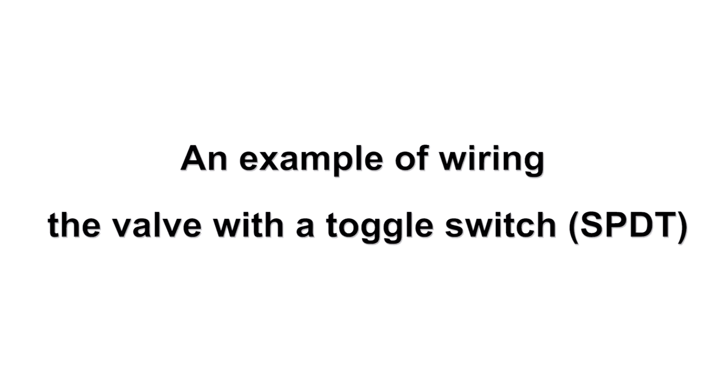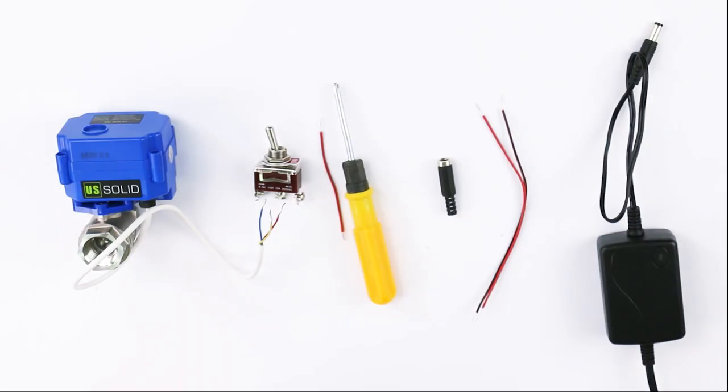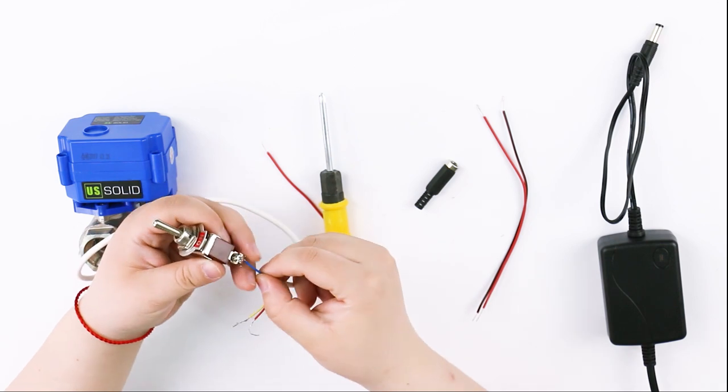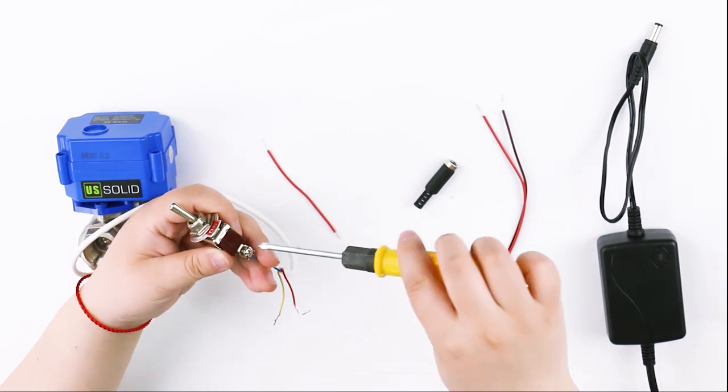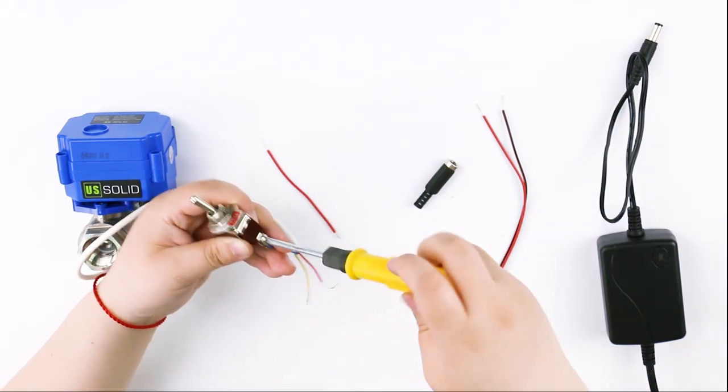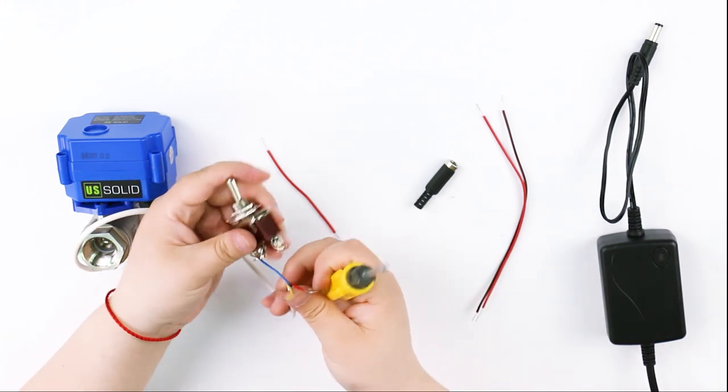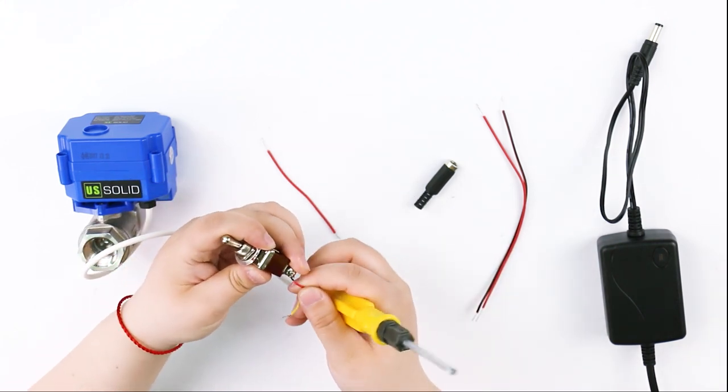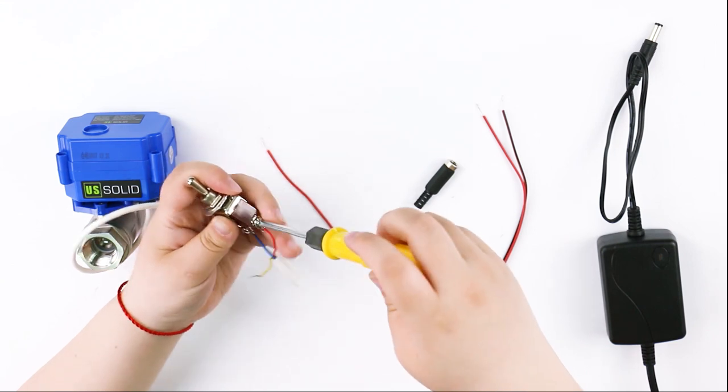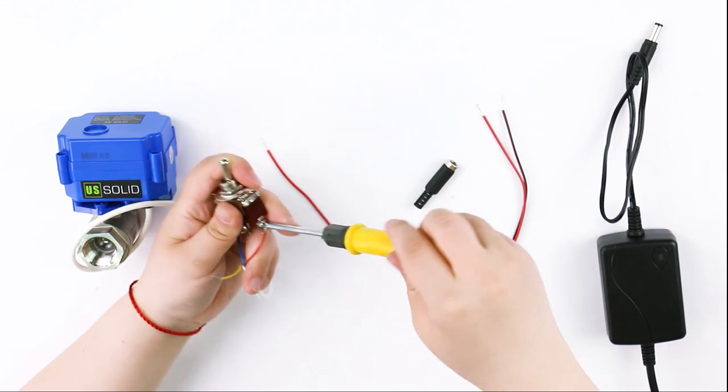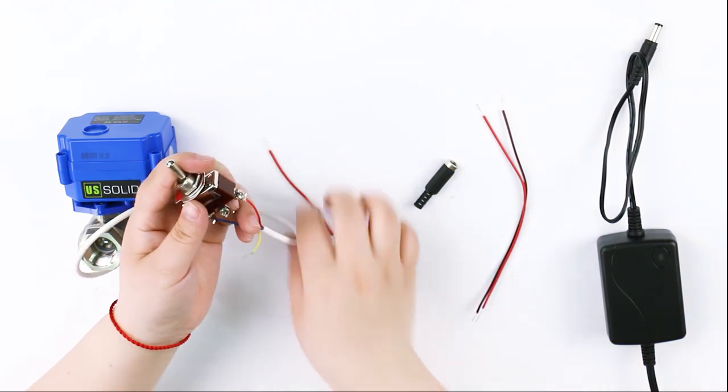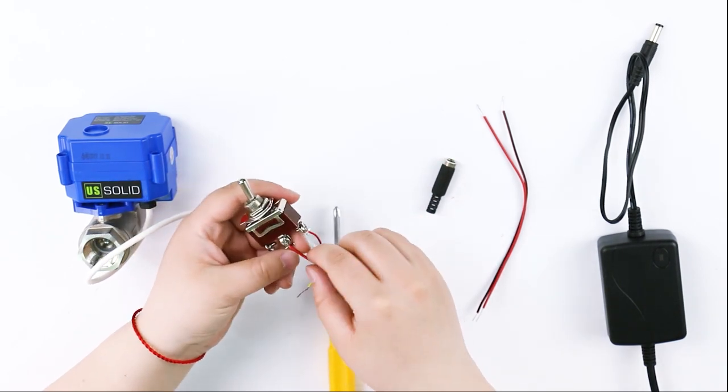We will show you an example of wiring the valve with a toggle switch. The two ends of the switch are connected with red and blue wires respectively, and the middle position will be connected with the positive pole of the power supply.